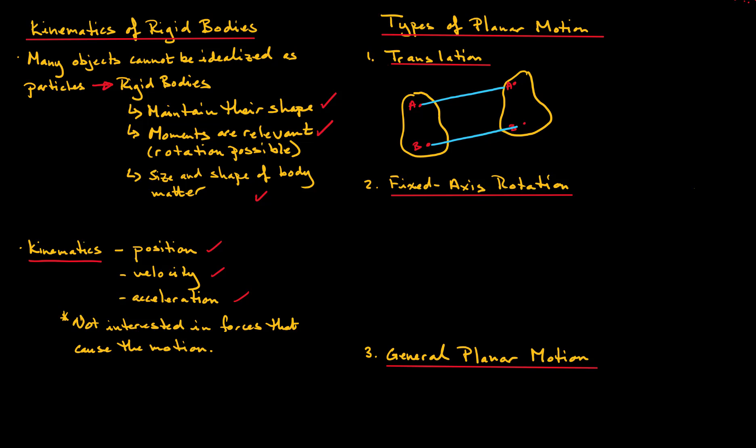So by that we mean that it has undergone translation as shown here. And translation is most rigorously defined as any straight line inside the body maintains the same orientation during the motion. So if we were to define this line between A and B, it maintains its orientation throughout the motion.